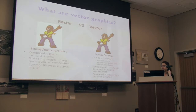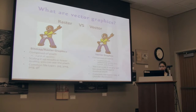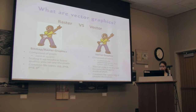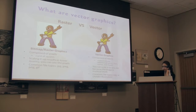Vector graphics, on the other hand, are not made of pixels — they're made of math. They're basically just a bunch of mathematical equations determining the points, lines, and curves and how they make shapes. Because they're mathematically put together, you can scale them to any size and they'll keep their quality. You'll see these as SVGs, or AIs if you're using Adobe Creative Suite.